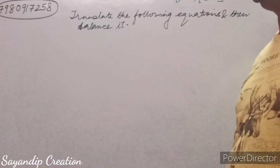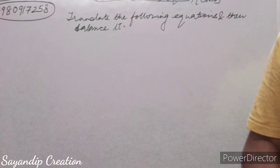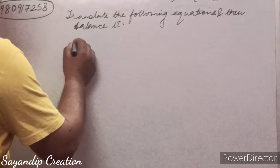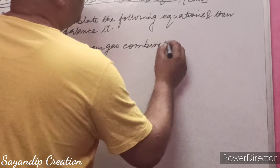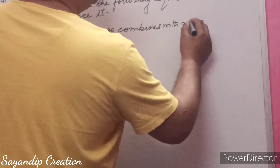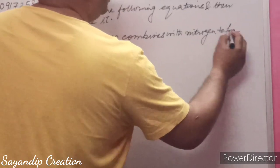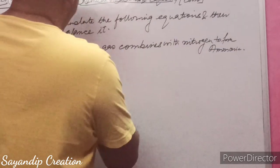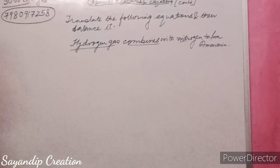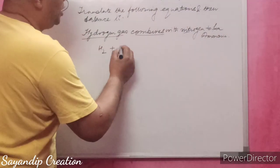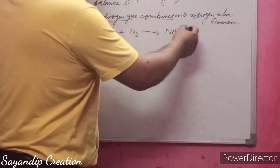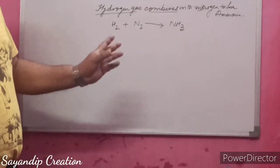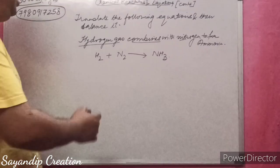For example: when hydrogen gas combines with nitrogen, it gives ammonia. This is given in words; you have to translate it into a chemical equation: H2 plus N2 forming NH3. You need to know that the formula for ammonia is NH3, which we already covered in the naming of compounds in the last class. Now see that this equation is not balanced.